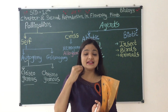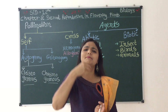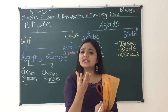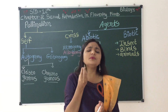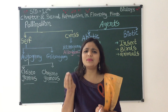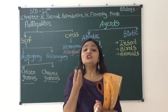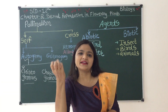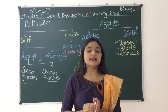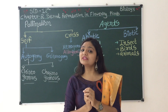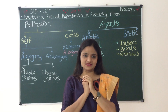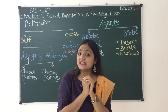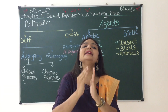Now for biotic agents — insects are very interesting and the most important, with the majority of pollination occurring through insects. You see how beautiful flower colors are — red, pink, purple, bluish, violet. Purple and violet colored flowers attract bees, while red-colored flowers attract butterflies. So pollination also occurs through insects; this is called entomophily.